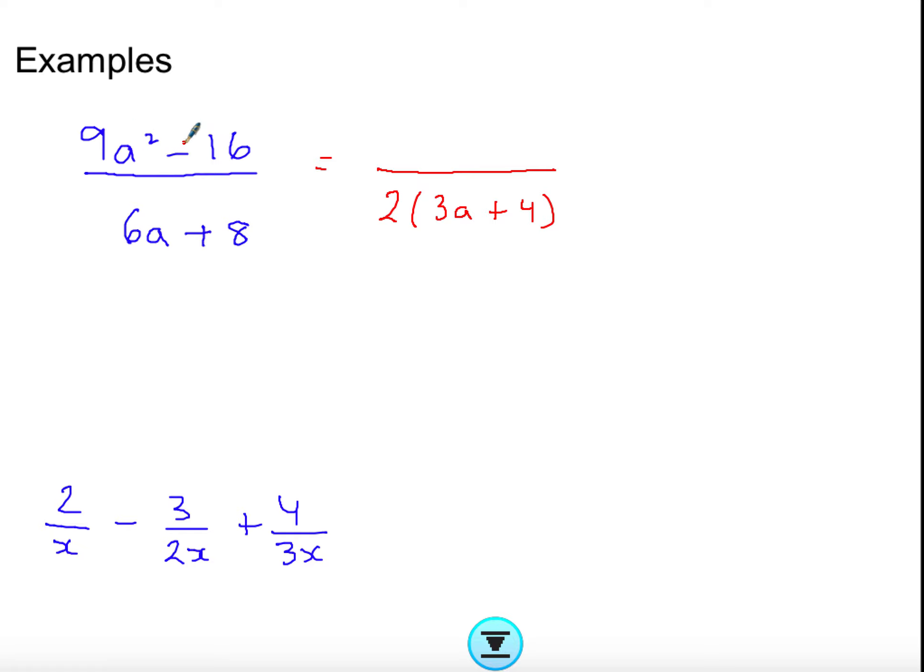The numerator doesn't seem like it can factorize, but actually it's a difference of two squares because 9a squared is a square, the 16 is a square number, and there's a minus between them. You square root both numbers so you get 3a, square root the 16 that's 4, and you repeat the same thing but one will have a plus, one will have a minus. I have two fractions that are exactly the same so I can cancel them out, and I'm left with 3a minus 4 over 2.